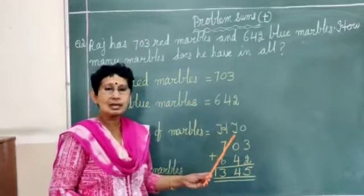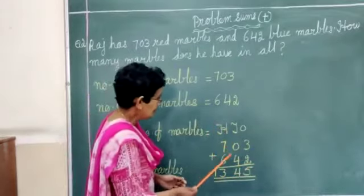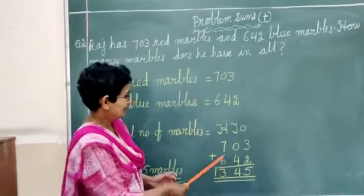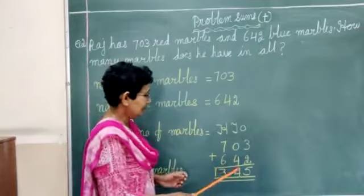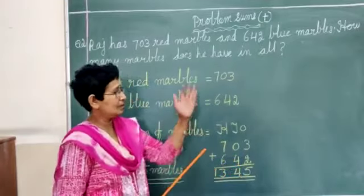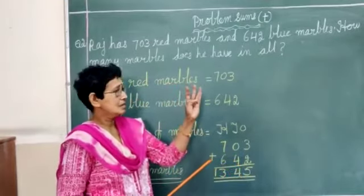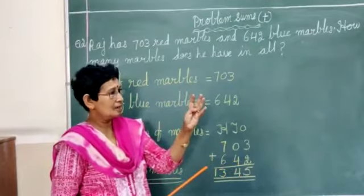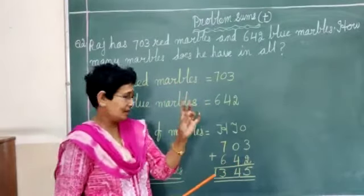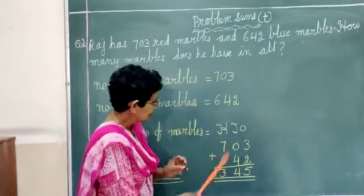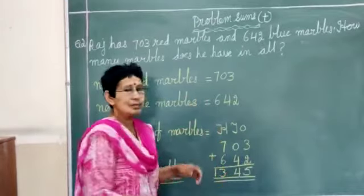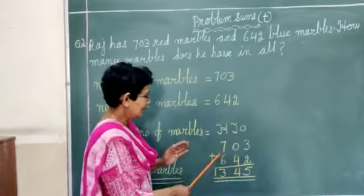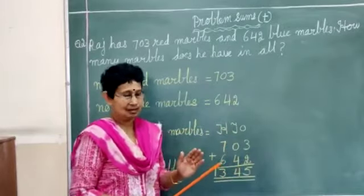Now coming towards the hundreds side. 7 and 6. So 7, the bigger number, we will keep in our mind. Smaller number is 6, we will count it on the finger. So 7, the next number is 8, 9, 10, 11, 12, 13. There is no other number here. So the last number as it is, we will write down here: 13. If it is 16 or 25, whatever number, the last number is coming, write it as it is.